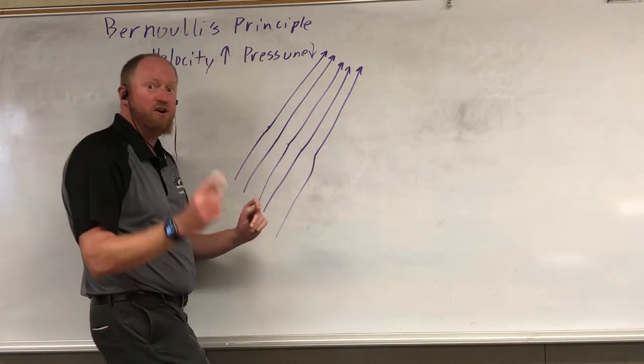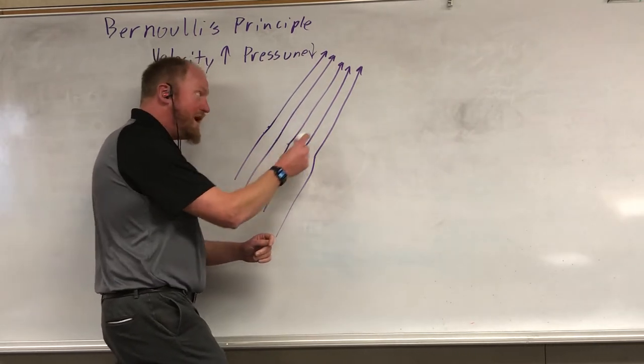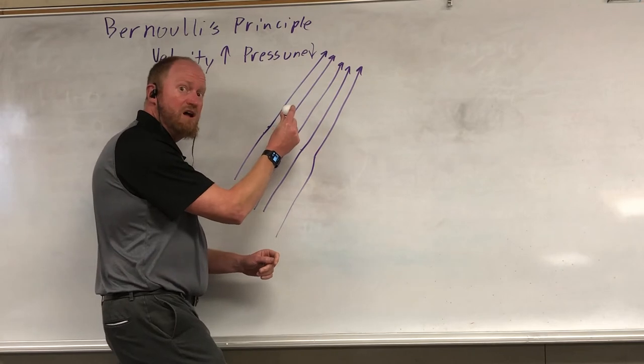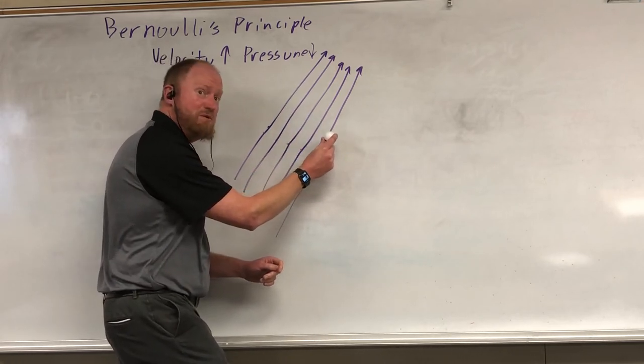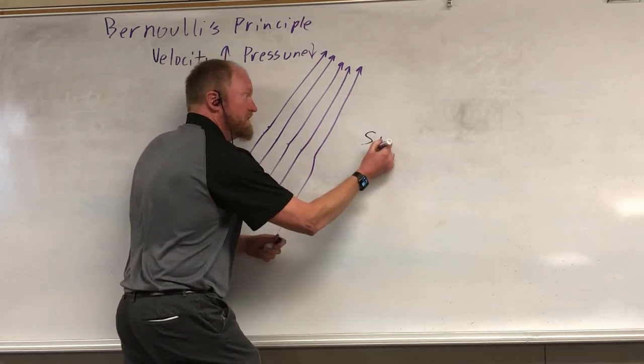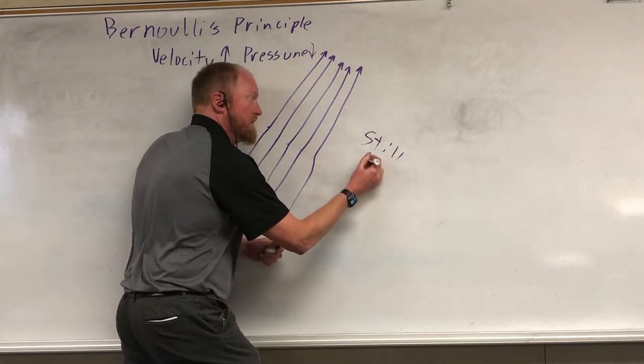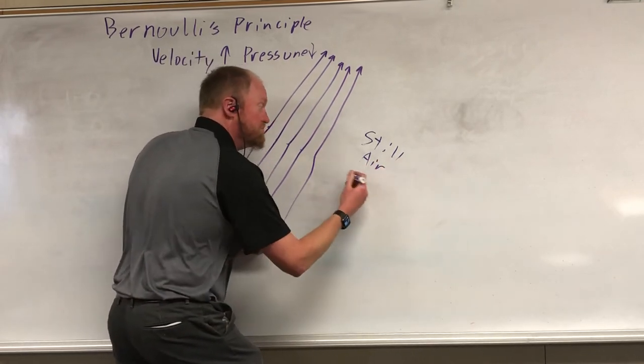So imagine this is the jet of air coming off the hairdryer, and this is the ping-pong ball. Well, when it's in the moving fluid, the pressure's lower, but as soon as it gets to the edge of that fast-moving fluid, where the air is still, well, still air means more pressure.